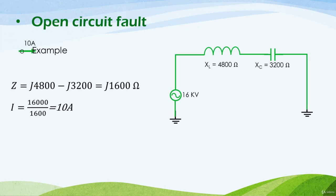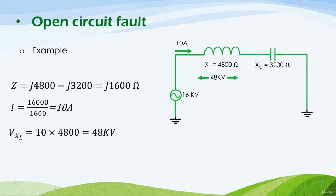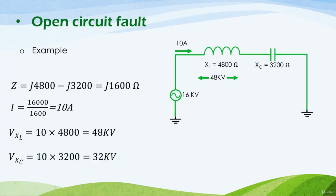This means there will be a total current of 10 amperes passing through the circuit. Now we calculate the voltage across each element — the capacitor and the inductor. The voltage across each equals the current through each times the impedance of each. The voltage across the inductor equals 10 amperes times the inductive reactance of 4800, giving 48 kV. And the voltage across the capacitor equals 3200 times 10 amperes, which gives 32 kV.